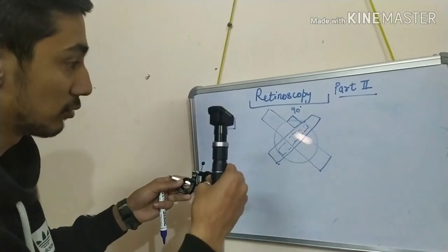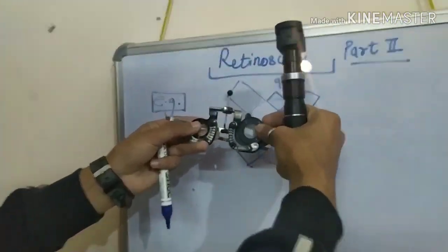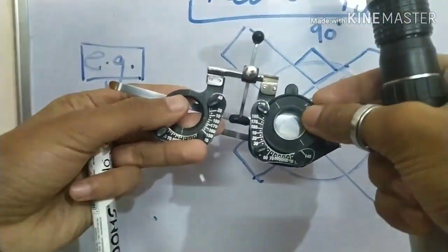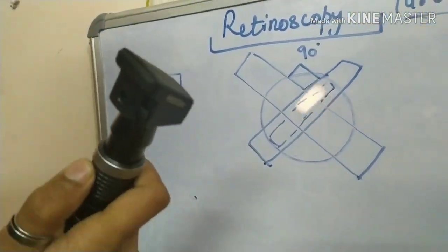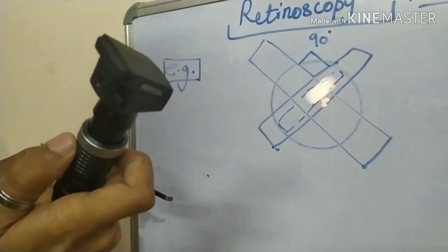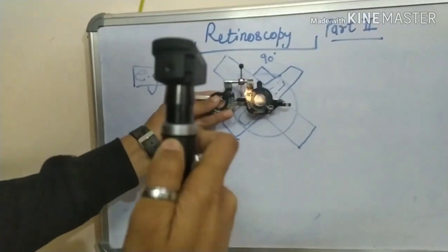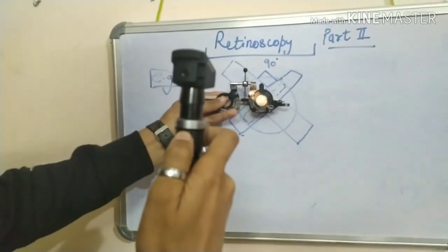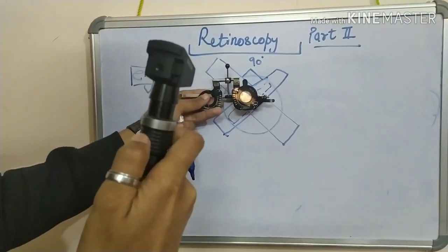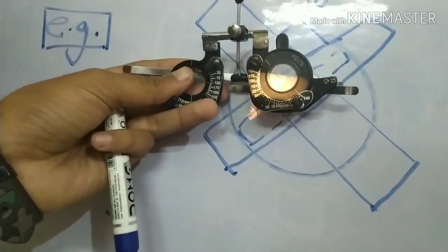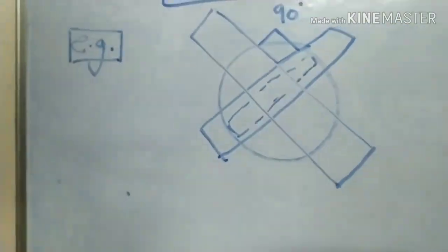So you have to put the cylinder in this direction. For example, at this meridian you have to neutralize. First, you neutralize the spherical meridian in this direction. Now you rotate 90 degrees and put the axis of the cylinder in the same direction — this is very important in retinoscopy. Now neutralize in this direction. As you neutralize, you can check all meridians whether the eye is neutralized or not. This is called the cylindrical finding of the retinoscopy.